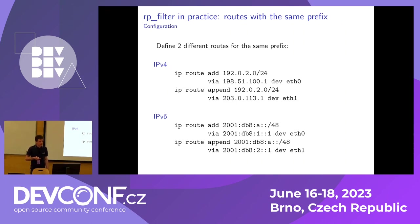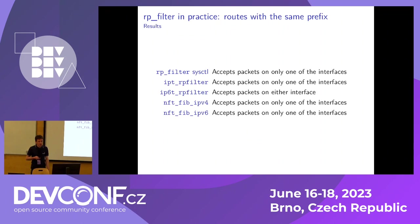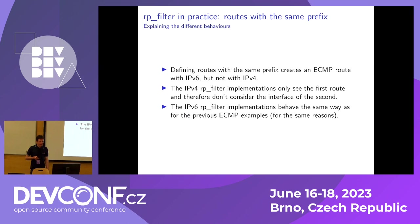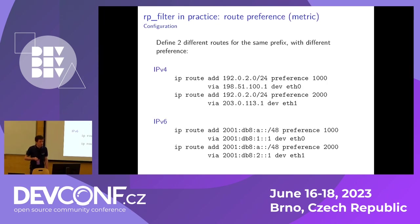Now let's see what happens when we define the same route twice but with different gateways using IP route append. This time we don't have an ECMP route — most implementations will only accept the first route, and only the ip6tables RPFilter implementation will accept packets from any of these interfaces. That's slightly related to how the kernel handles ECMP: even though we didn't explicitly want an ECMP route, IPv6 internally converts these routes into a single ECMP route.